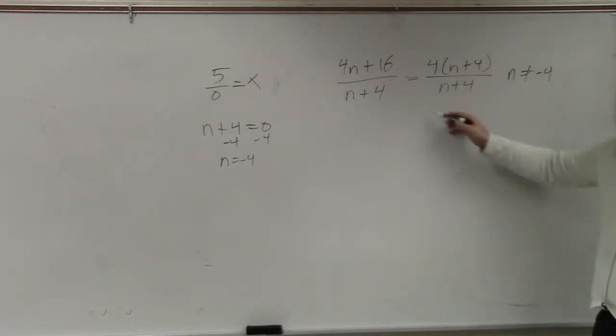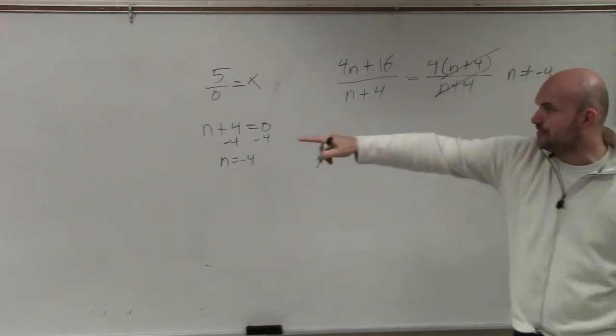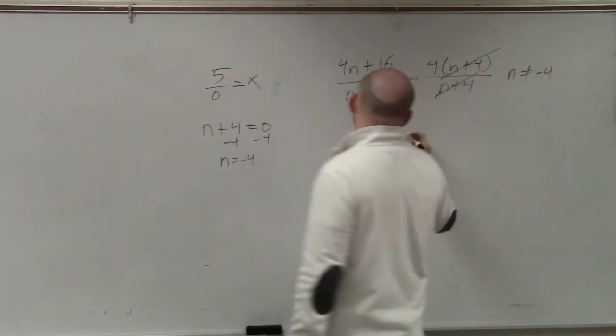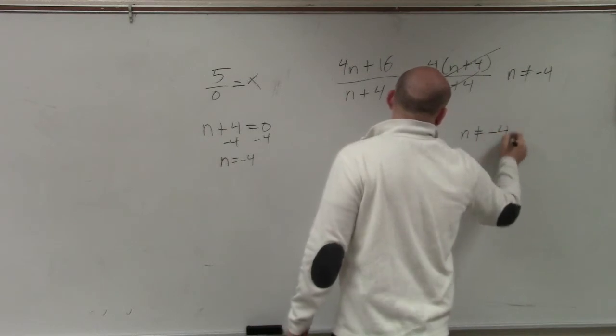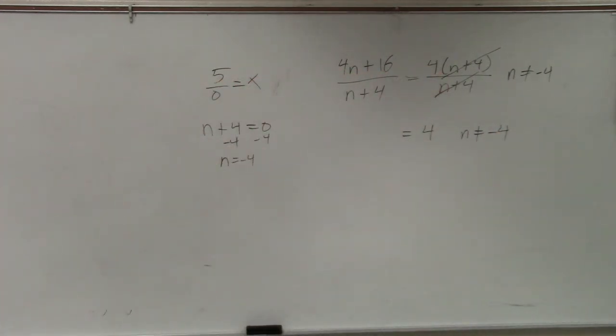So now, is there anything else I can simplify? Anything else I can divide into 1? What about (n plus 4) divided by (n plus 4)? That divides to 1, correct? So therefore, my final answer is 4 where n cannot equal negative 4. That is what your final answer would look like.